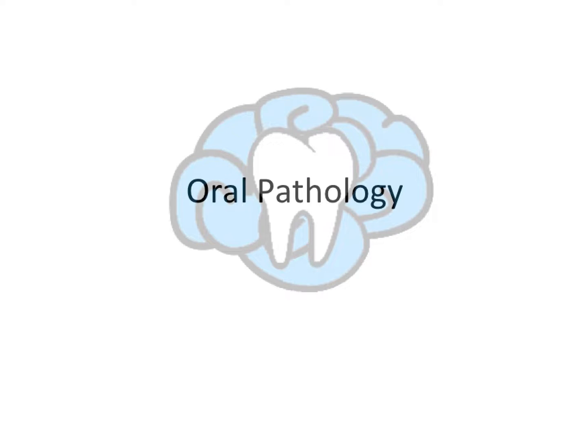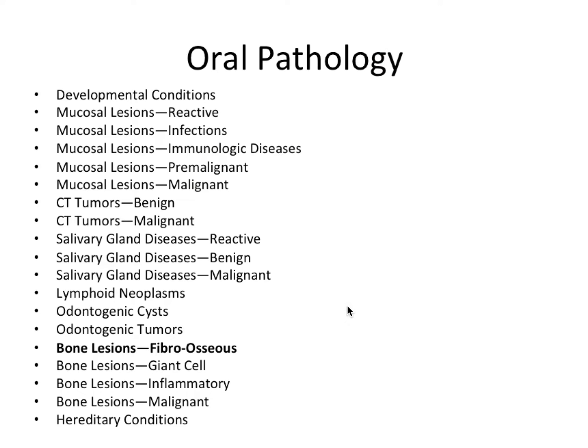Hey guys, it's Ryan. Welcome back to another oral pathology video. This time we're going to talk about fibroosseous bone lesions. These are benign tumors that are composed of fibrous tissue in which new bony islands develop. A lot of these are going to contain a radiopaque component because we're talking about osseous, mineralized, and fibrous tissue — so think more radiopaque as opposed to the cysts and tumors we've talked about, most of them being radiolucent.